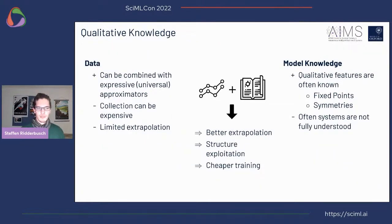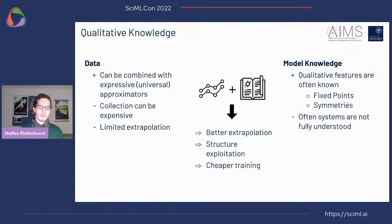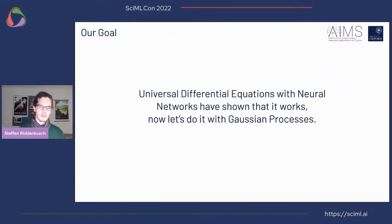What we want to do is combine data and model knowledge, because that is substantially more powerful than having either individually. We ideally want to learn a model that can take data for terms that are difficult to describe analytically, but if we have some analytic knowledge or qualitative assumptions about a system, it would be nice to incorporate those as well. Combining the two should give better extrapolation performance, exploitable structure, and often cheaper training. Universal differential equation networks have shown this can be done — now let's do it with Gaussian processes.